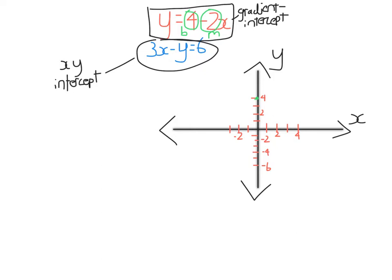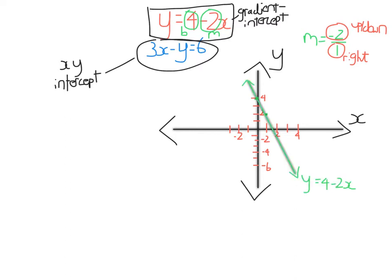So you mark the y-intercept, which is 4. Then you use the gradient, minus 2 in this case, to come up with the second point. If the gradient is minus 2, which is minus 2 over 1, the bottom number tells you how far you go right and the top number tells you how far you go up or down — positive means up, negative means down. So I go 1 to the right and 2 down to find the second point, then join them up.